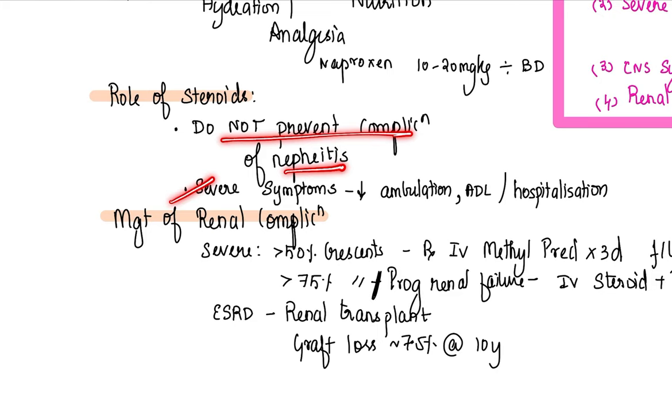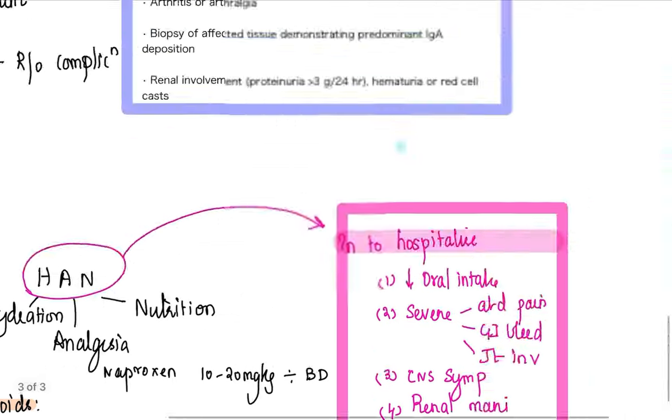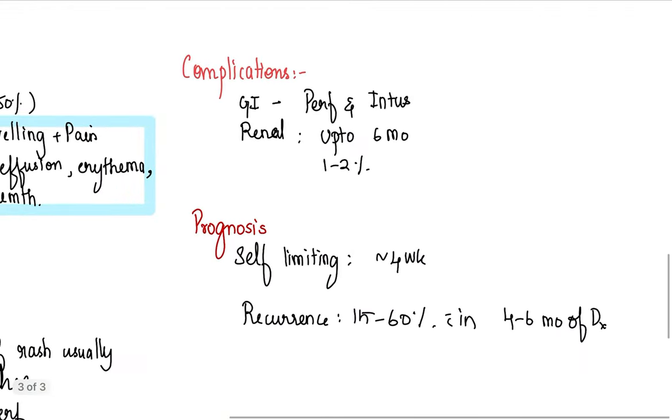There is no role for steroids in prevention of nephritis. You use it only if there is severe GI or joint involvement debilitating the patient, or which makes him or her require a hospitalization. The management of renal complication depends upon the severity. More than 50 percent is just steroids, IV and oral. More than 75 percent is IV steroids and plasmapheresis. ESRD is renal transplant. Complications of GI, renal, and CNS has to be remembered.